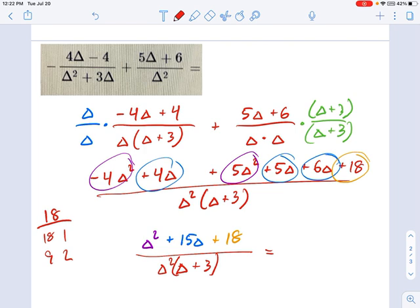Negative 4 delta squared, 4 delta. I think those all look good. 5 delta. No, there it is. Oh, son of a gun. Okay, 15 delta.